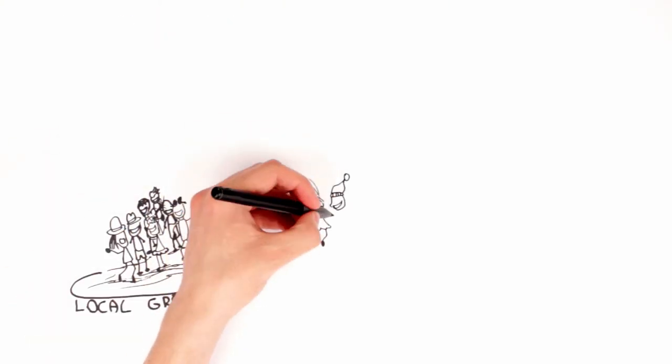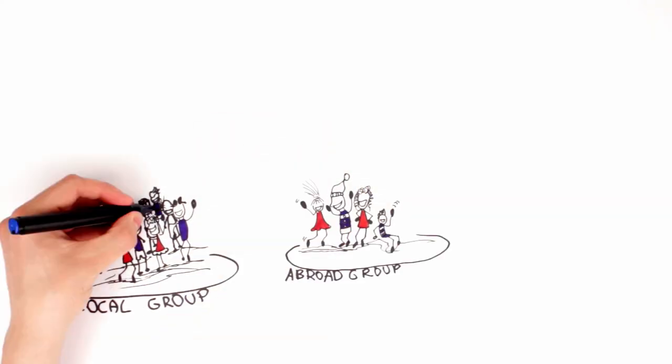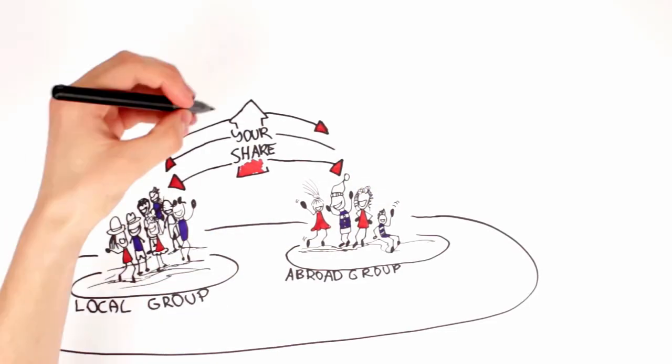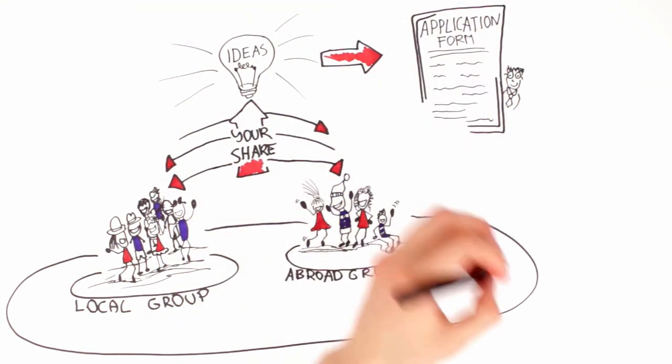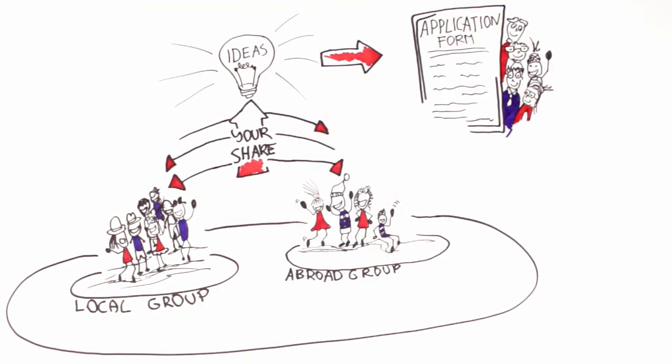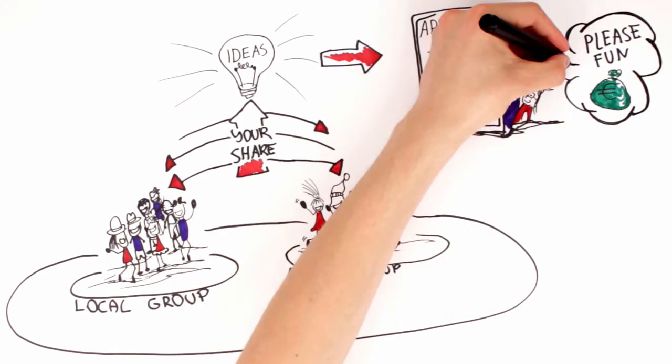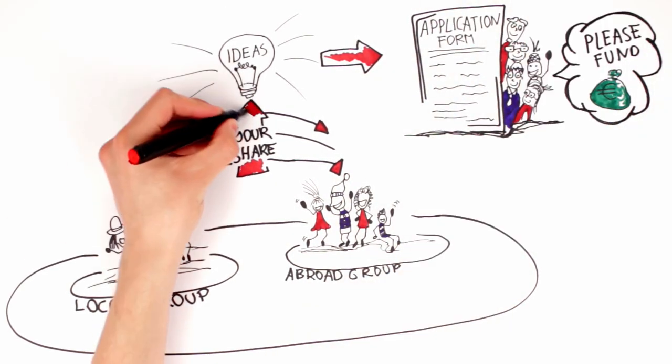Start developing your exchange project further once you have your local group interested and at least one partner group abroad. Discuss your ideas and set them out using the official Erasmus Plus Youth in Action application form. Apply for funding, respecting the deadlines and cross your fingers in anticipation of a positive answer.